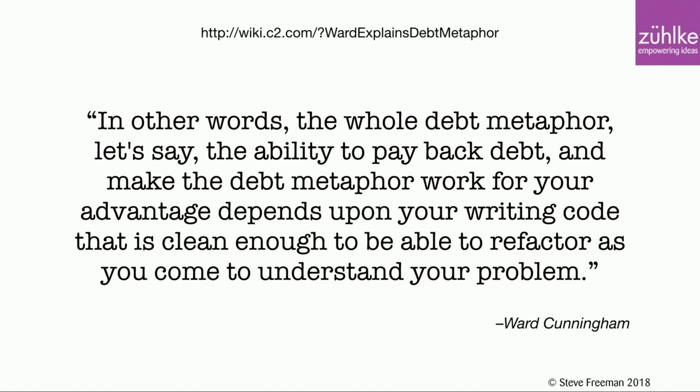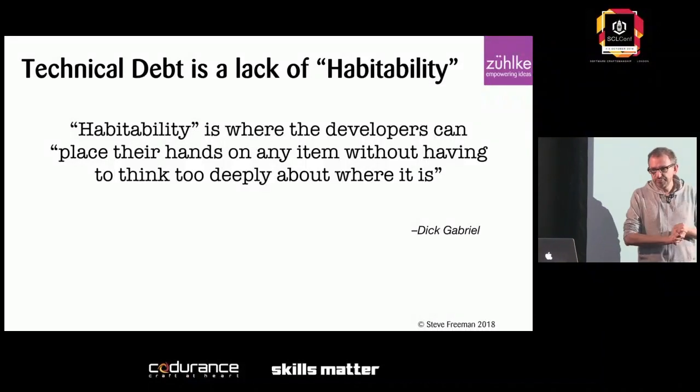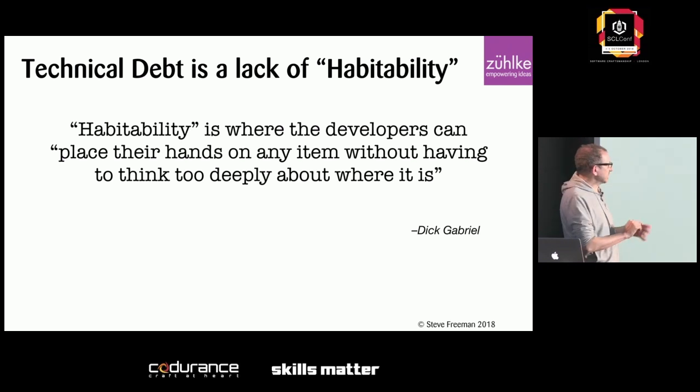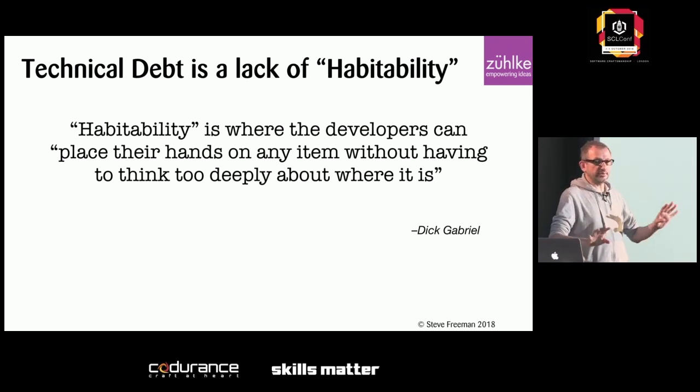So this is not 1,000-line switch statements and 20,000-line methods and the rest of it. This is not about that kind of problem. But another explanation of this is technical debt as a lack of habitability — a term from Dick Gabriel. It's a sense of a codebase where you know where stuff is and you don't have to think about it because it's in the right place.